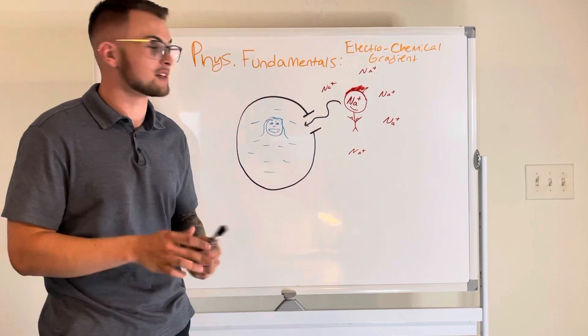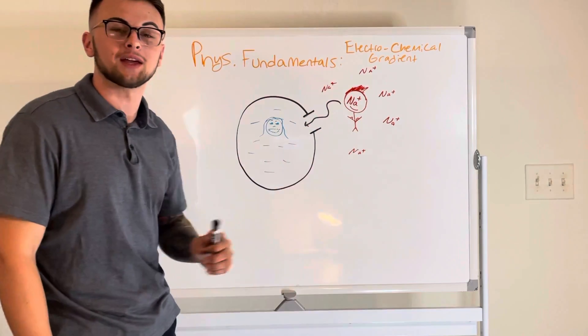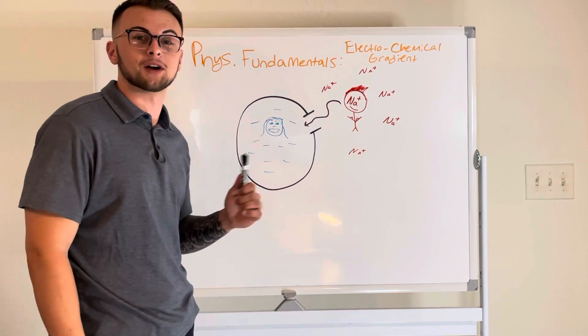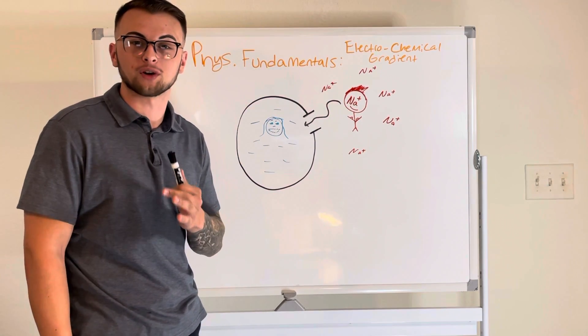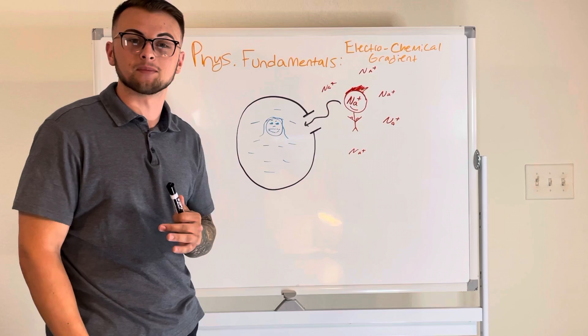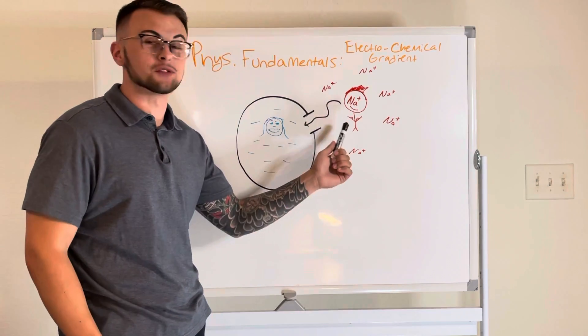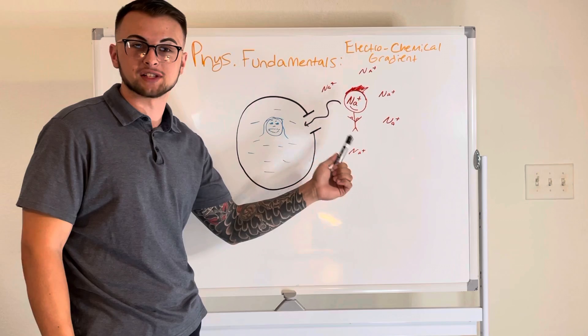A substance is like a manly person and whether our manly person wants to come into our cell city depends on that person's electrochemical gradient. Simply said, the electrochemical gradient is just a person's motivation to enter our cell city.